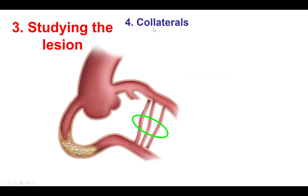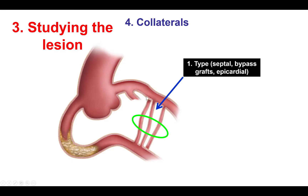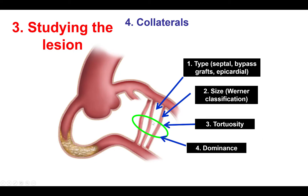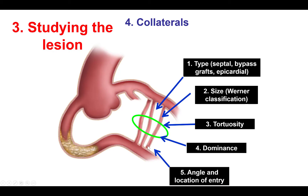The fourth thing to look at is the presence of collaterals — are they septal, bypass graft, or epicardial? The larger they are and the less tortuosity they have, the easier to cross. It's also important to know if they are dominant, because if there is only a single dominant collateral, crossing it can cause significant ischemia, leading to arrhythmias and hemodynamic collapse. Finally, we want to look at the angle and location of entry of the collateral vessel.